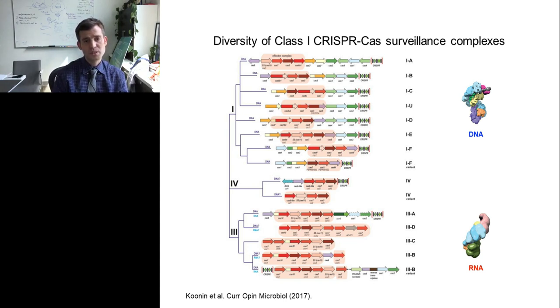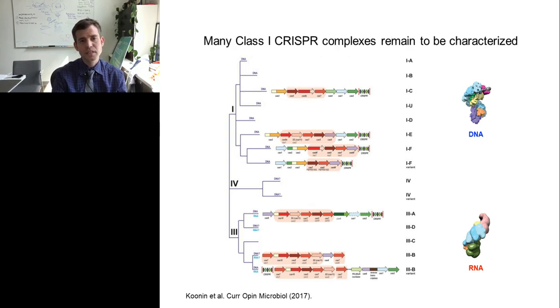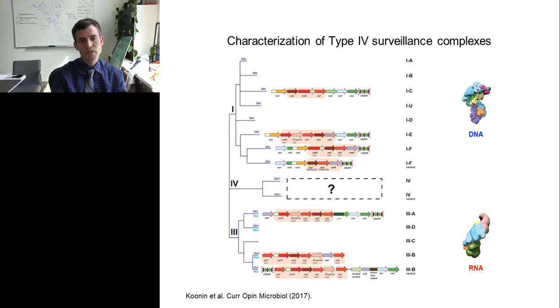Here's from actually an outdated review article now, which just shows you the breadth and depth of the diversity of these class 1 CRISPR-Cas systems. There's the type 1, which can be divided up further. The type 1 systems usually target DNA. And then there's the type 3 complexes, which target RNA. They also target DNA, but for our purposes, we'll say they're targeting RNA. And there's recently identified type 4 complexes. Many of these class 1 CRISPR systems remain to be characterized. We're going to focus today on these type 4 complexes, which are really uncharacterized.